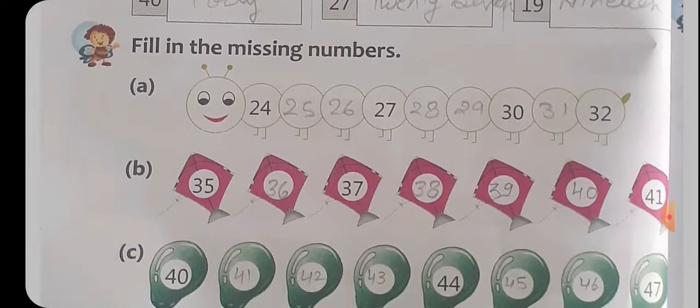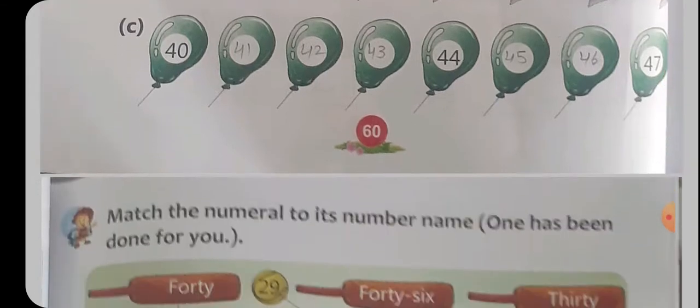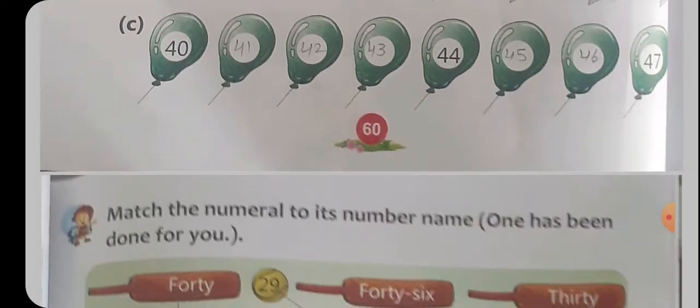फिर है Fill in the Missing Numbers। जो भी Numbers missing हैं उनको fill करना है। जैसे 24 के बीच में है 25, 26। फिर 27 दे रहा है, फिर 28, 29, 30 दे रहा है, 31। fill करना है। फिर 44 दे रहा है, 45, 46, 47।